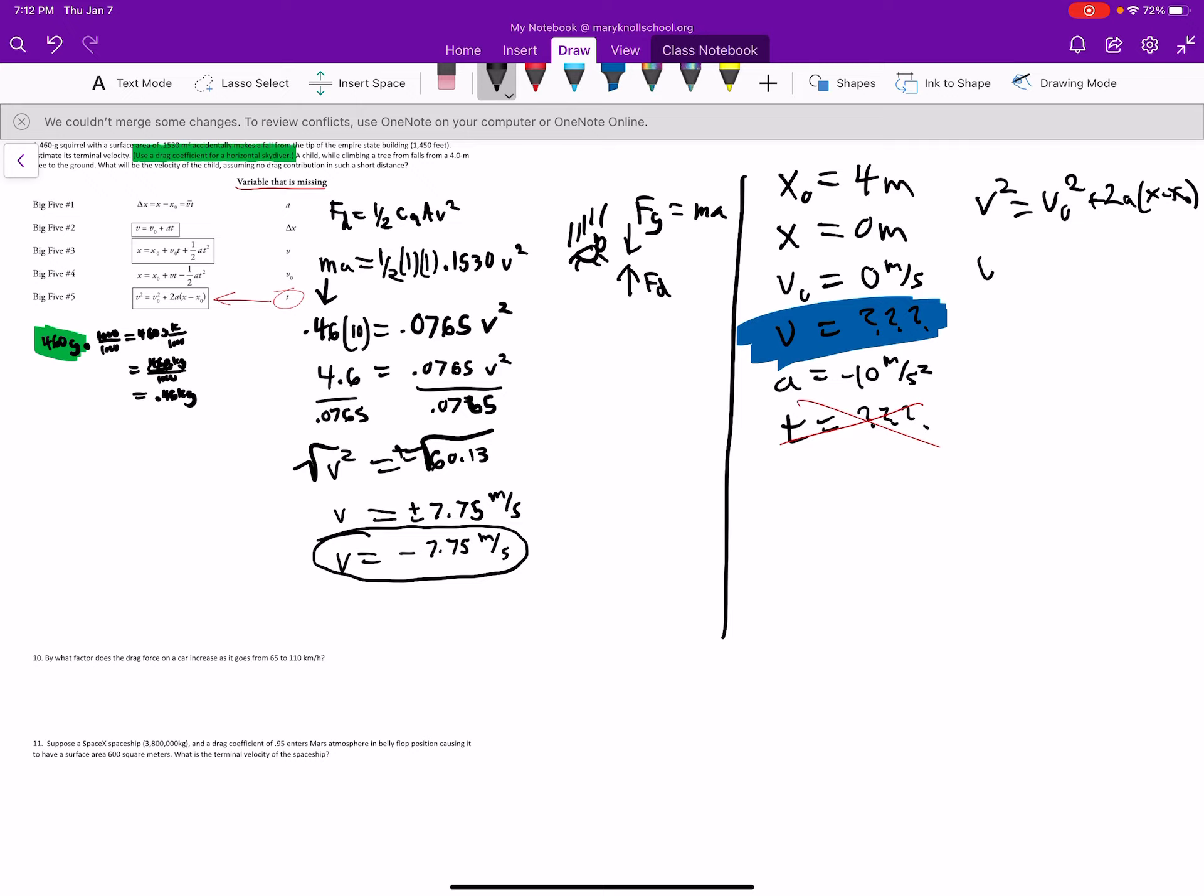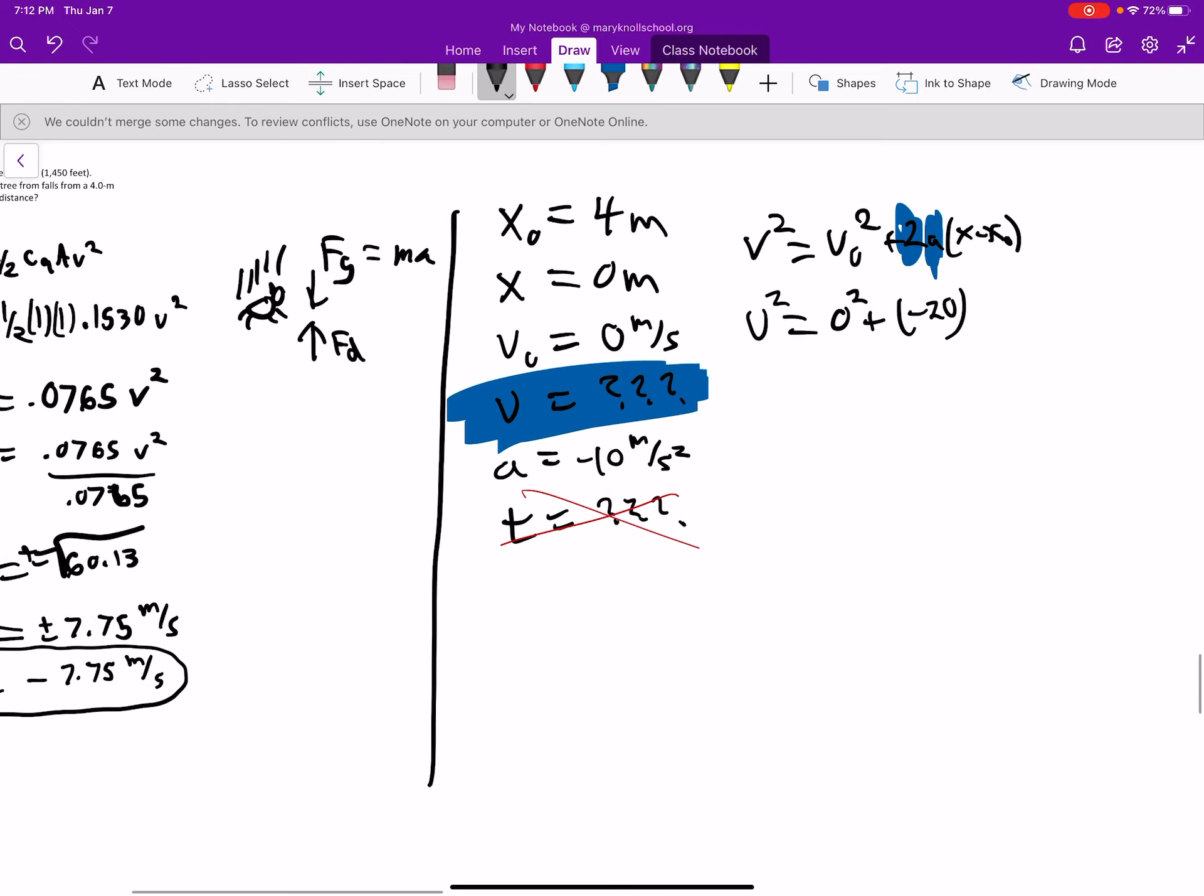V squared equals V0 squared plus 2A X minus X zero. All right. So V squared, that's what we're solving for. V zero squared, that's just zero squared, right? Plus 2A. 2 times A is going to be 2 times negative 10. It's going to be negative 20, right? So this is 2. This is negative 10. 2 times negative 10 is negative 20. Okay. So then X minus X zero. X is zero. Minus X zero. Minus 4. This is a really easy place to make a mistake, too. A lot of times people will make these positive or switch these around. Get the sign wrong here. All right.